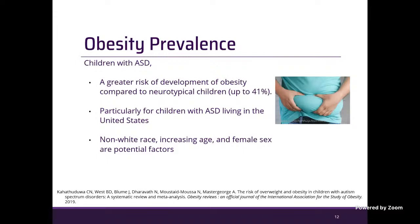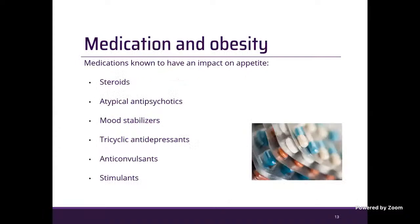Moving on to chronic disease risk: children with ASD have a greater risk of developing obesity compared to neurotypical children — up to 41 percent. A meta-analysis showed that children with ASD living in the United States have a particularly higher prevalence of obesity compared to other parts of the world, and non-white race, increasing age, and female sex are potential contributing factors.